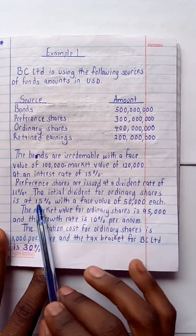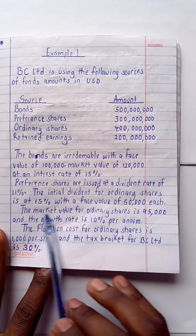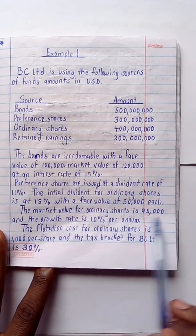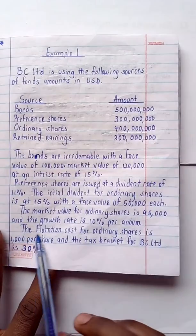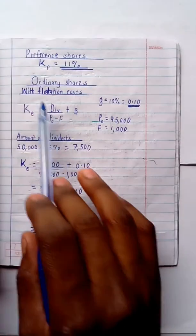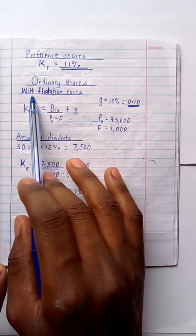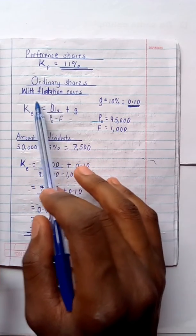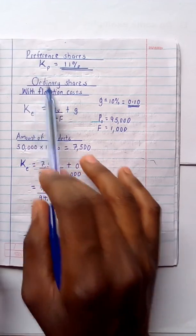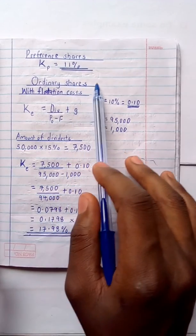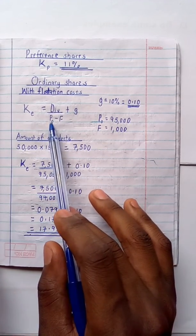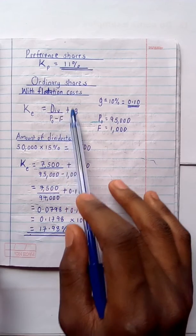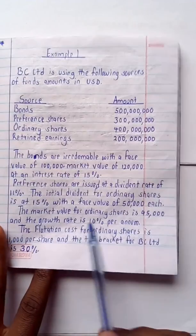Moving on to ordinary shares. The initial dividend is 15% on a face value of 50,000 each, the market price is 95,000, the growth rate is 10% per annum, and the flotation cost is 1,000 per share. Because there are flotation costs, I'll use the formula: cost of equity = dividend ÷ (market value − flotation cost) + G, where G is the growth rate.